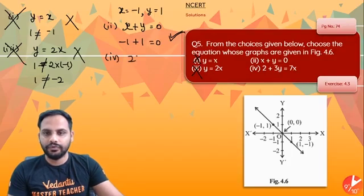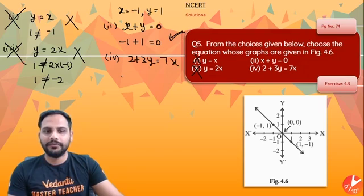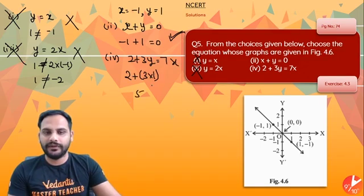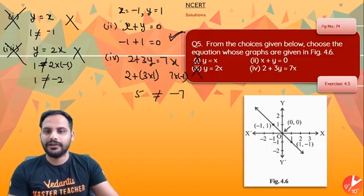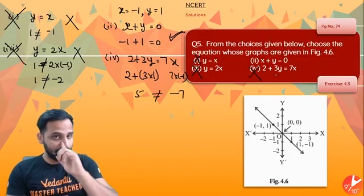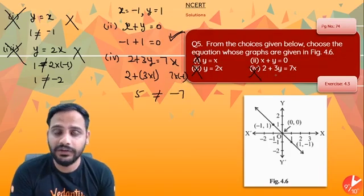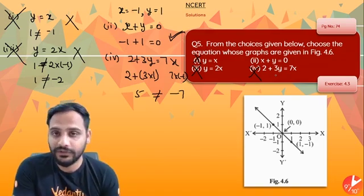The fourth part, 2 plus 3y is equal to 7x, I know it will not satisfy. Put x as minus 1 and y as 1. So 2 plus 3 into 1 will be equal to 5 and 7 into minus 1 will be equal to minus 7. Again they are not equal. So I saw the second equation is satisfying only the point minus 1 comma 1.